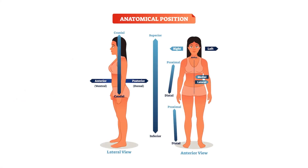Now let's take a closer look at the anatomical position and some reference points you'll need to know, specifically in the thorax and abdomen. The first directional term is anterior or ventral — it indicates that a structure or body part is towards the front of the body or in front of something. The opposite term is posterior or dorsal, and both the thorax and abdomen also have a posterior wall.